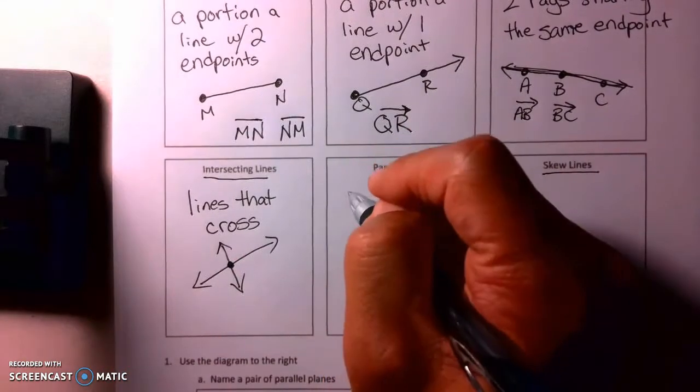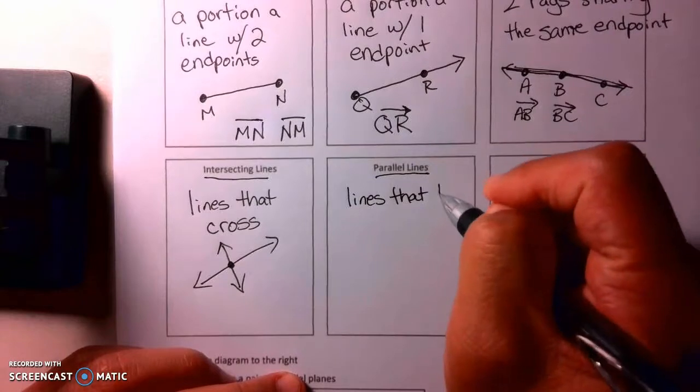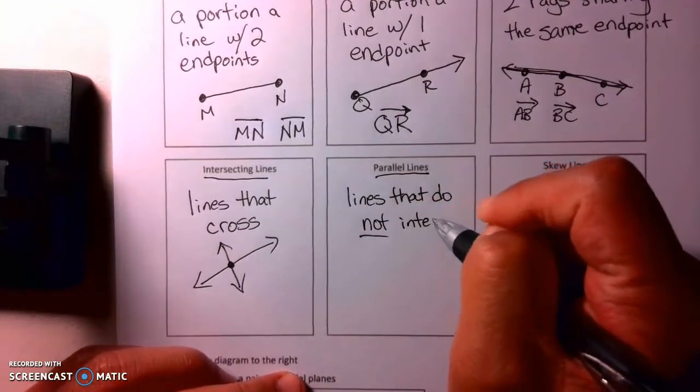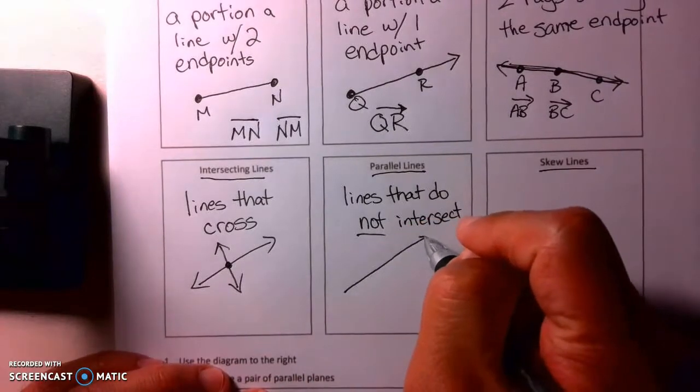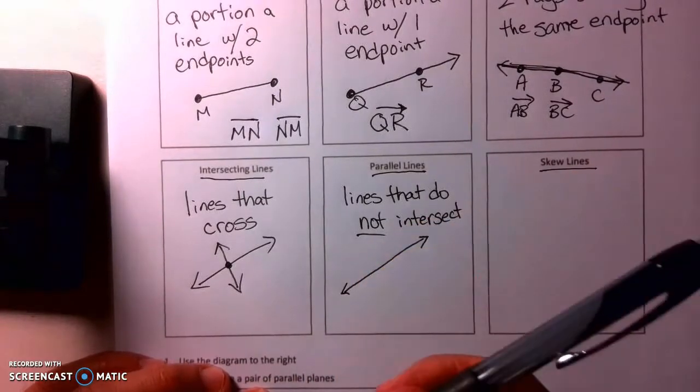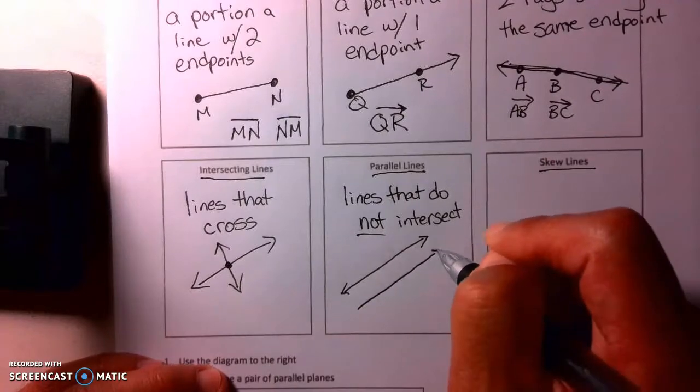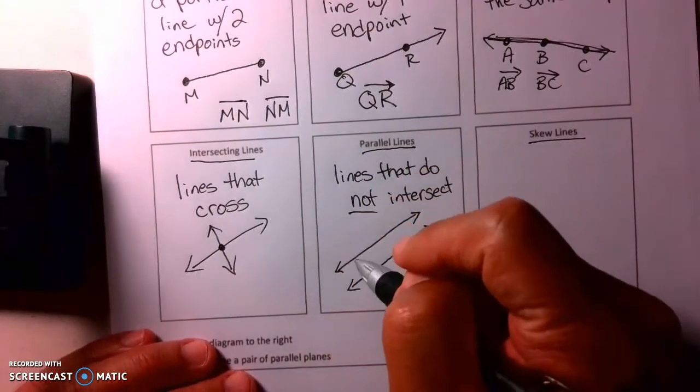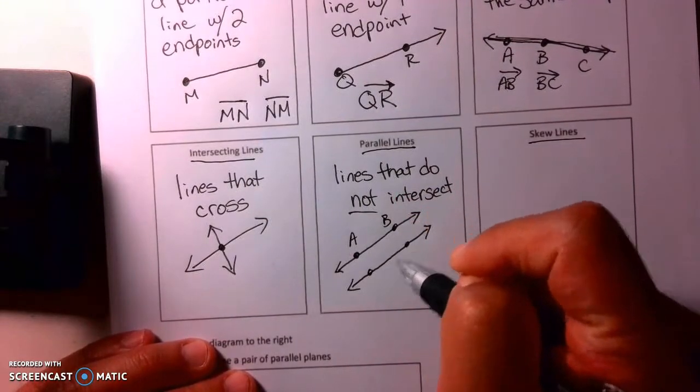So, parallel lines are lines that do not cross, or do not intersect. And I'll draw this line here, and you don't want to hit it, so you're going to go the same exact direction, and those will be parallel lines here.